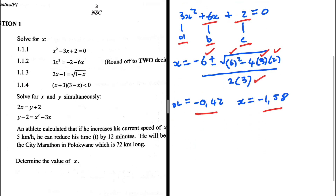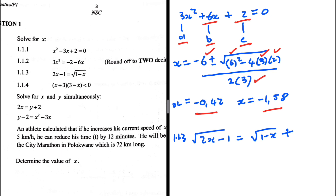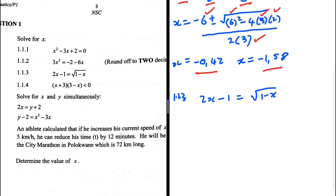Let's do 1.1.3. We have 2x minus 1 equals the square root of 1 minus x. This is actually an easy case. A difficult case would be if you have a constant on the same side as a square root. In this case we can fairly say the question is not too difficult. Squaring both sides, we get (2x minus 1) squared equals the square root of (1 minus x) squared — I've written it out again for clarity.